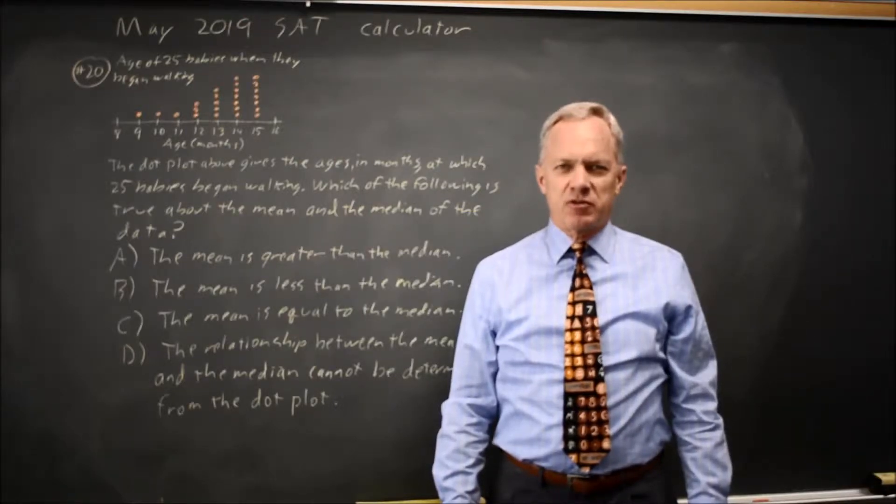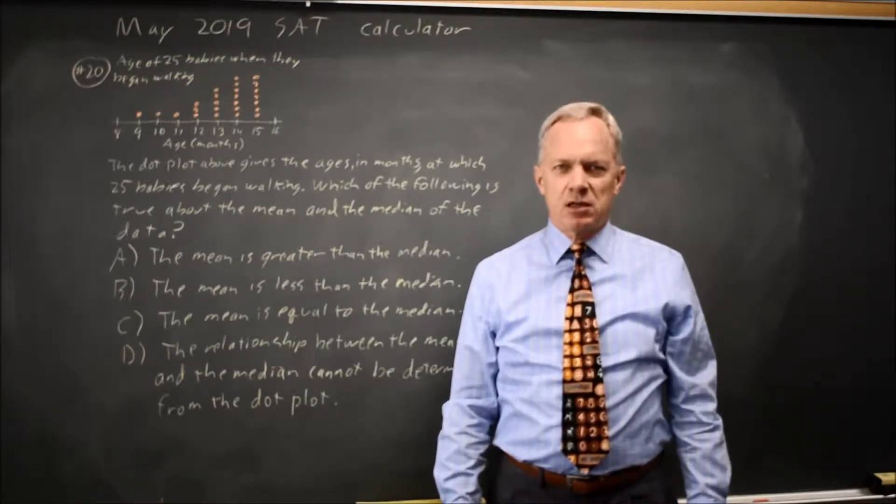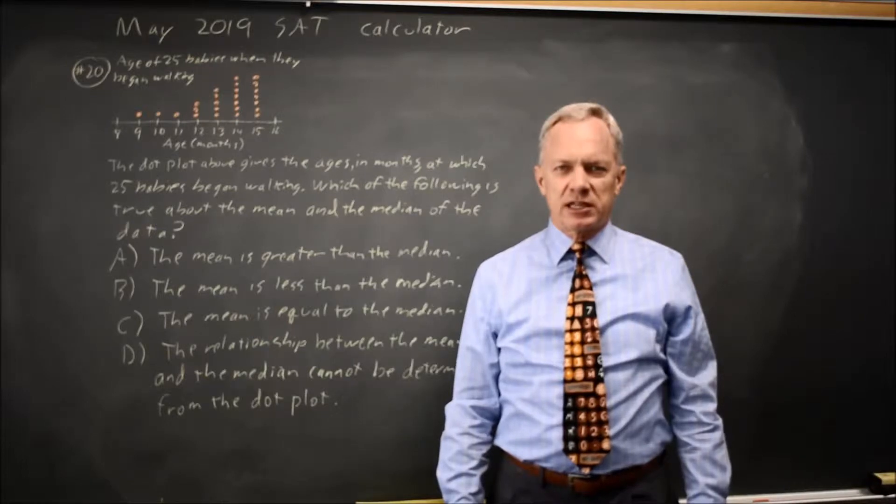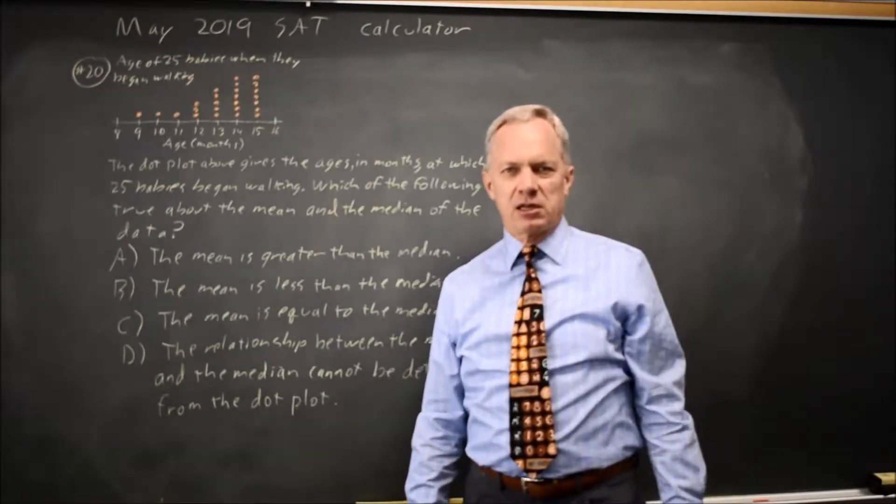This is calculator question number 20 from the May 2019 SAT. College Board gives us a dot plot and asks us to compare the mean and median for the data.